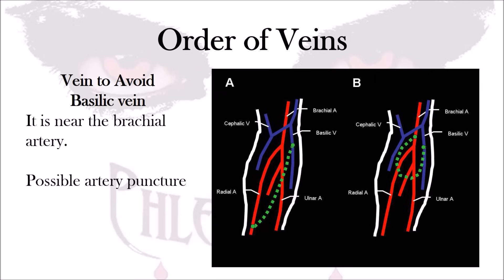The basilic vein is a last resort — a last attempt if all other veins are not accessible, namely the median cubital, cephalic, the back of the hand, or the wrist. Then the basilic vein can be considered if nothing else is available. We want to avoid doing any harm or damage to the patient. Additionally, nerves run parallel with the basilic vein, and if we're not careful, we might nick or hit a nerve with the needle, causing nerve damage. So we have a possible high risk of both arterial puncture and nerve damage when trying to access blood from the basilic vein. The basilic vein should always be attempted last when all other veins are not accessible for venipuncture.